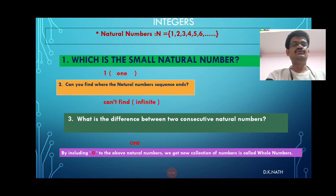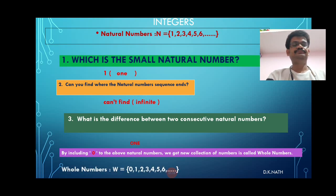By including 0 to the above natural numbers, we get a new collection of numbers called whole numbers. Whole numbers are denoted by W: 0, 1, 2, 3, 4, 5, 6 and so on.